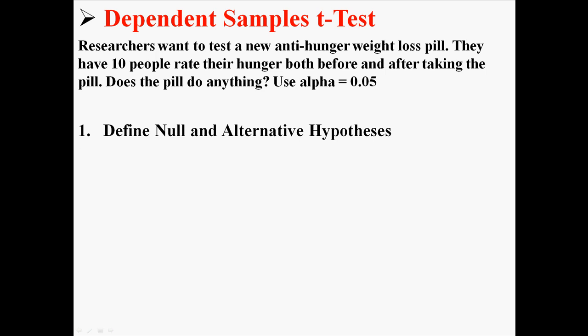First, our null and alternative hypotheses. There are a few different ways to write this, but our null hypothesis is that the mean before and the mean after are the same — there is no difference. Our alternative hypothesis, H1, is what we're testing: to see if the before and after are different. We start with the assumption that they're the same and test to see if there's any difference.